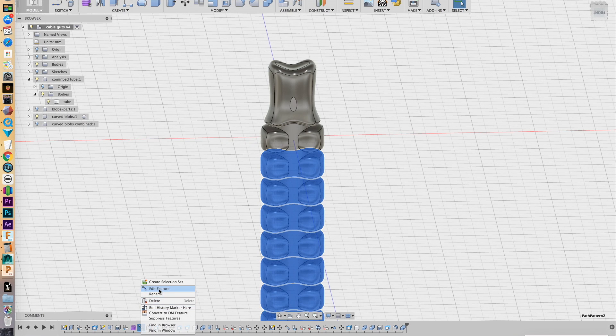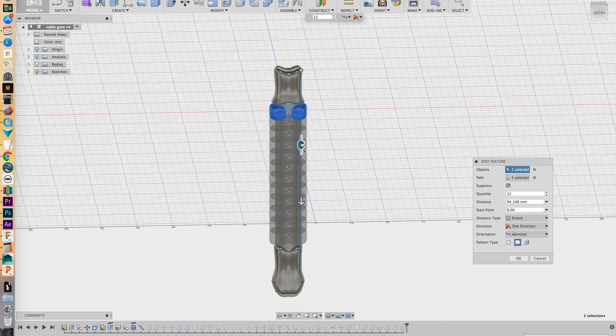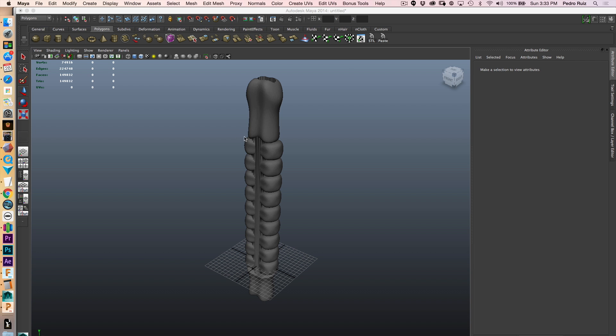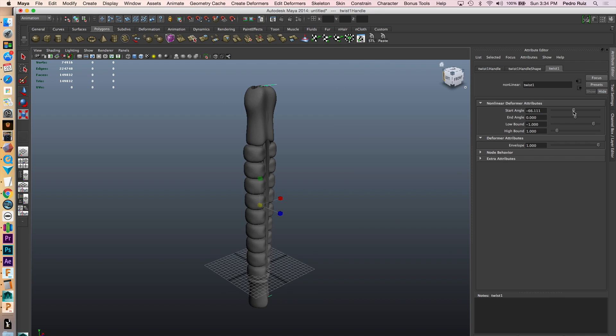We duplicated one section using the pattern feature, which made it really easy to adjust the length of the part to match the length of our charging cable. We then brought the object into Maya, where we added non-linear deformers to give the geometry a twist. This makes it look more organic by adding more curvature.